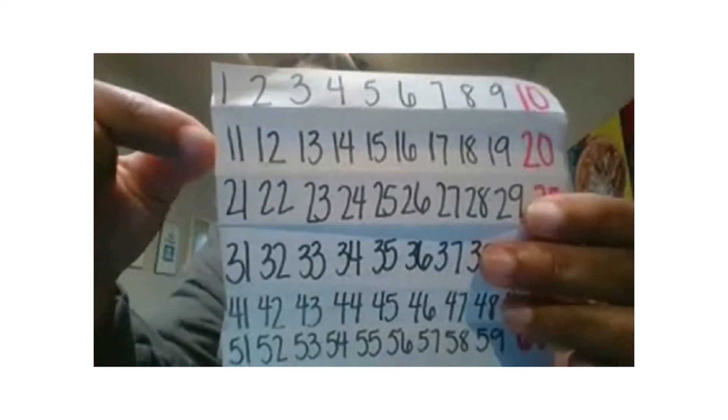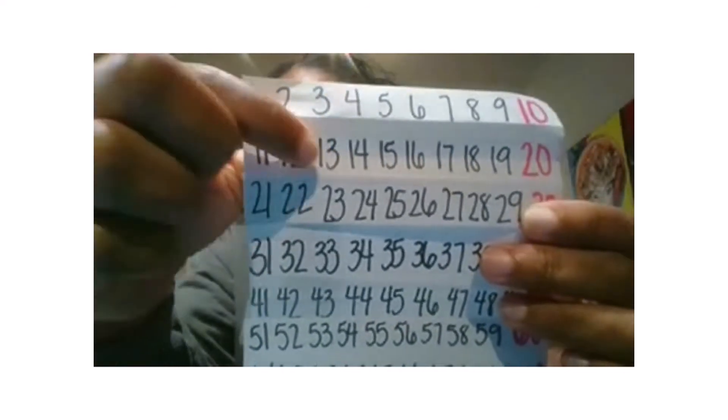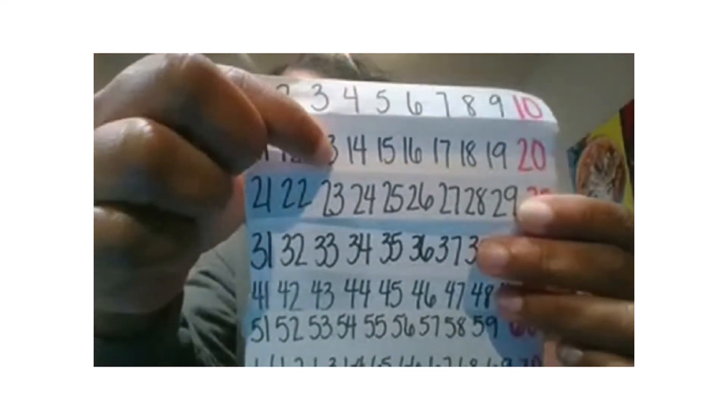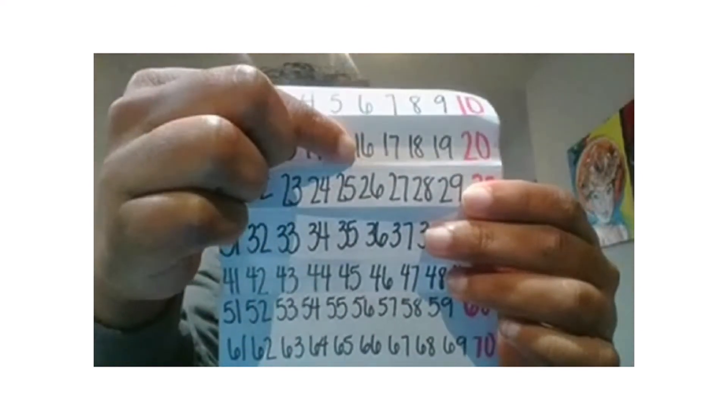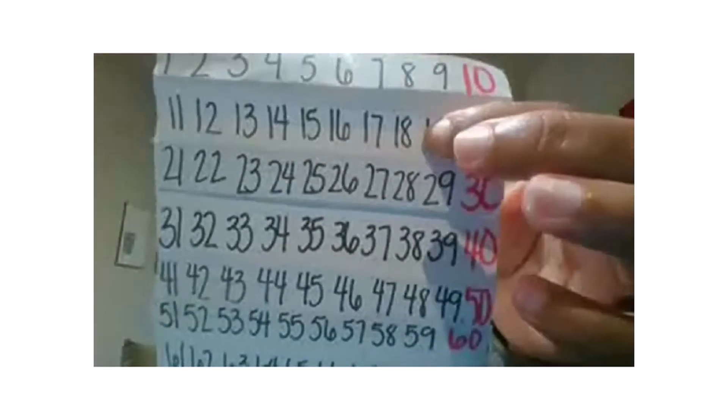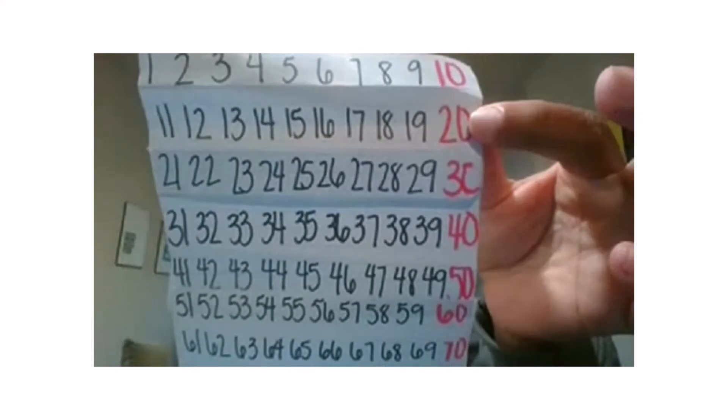Now let's count the Say Ten way from 11 to 20. We're going to count the Say Ten way from 11 to 20. Ten one, ten two, ten three, ten four, ten five, ten six, ten seven, ten eight, ten nine, two tens.